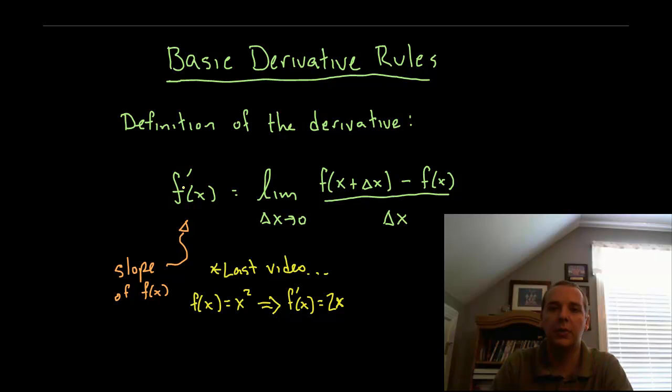Here's the formal definition of a derivative. It's the limit as delta x approaches 0 for f of x plus delta x minus f of x all divided by delta x. Without going into a lot of detail as to why that gives you the slope at a particular point, just very briefly.